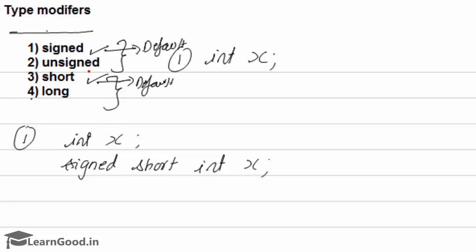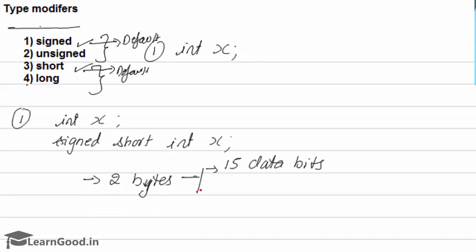But the same thing if you apply unsigned, then there won't be any sign bit. All the bits will be used as data bits. So here when I give int x, this will be taken as signed short int x. That means number of bytes allocated is going to be 2 bytes. That means 2 bytes means 16 bits. In this 16 bits, 15 will be used as data bits and last will be used as a sign bit.